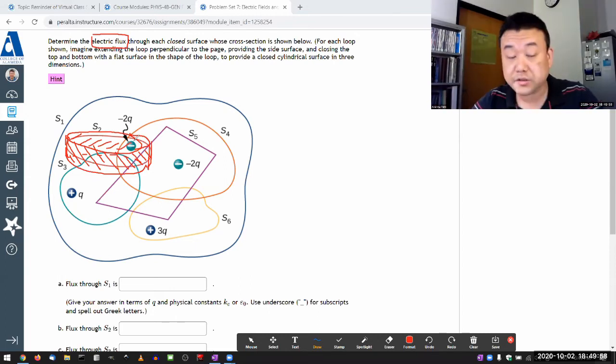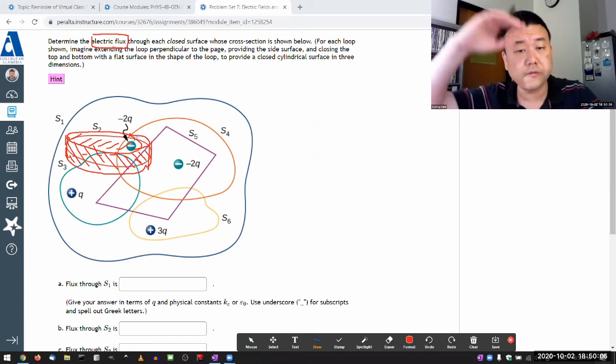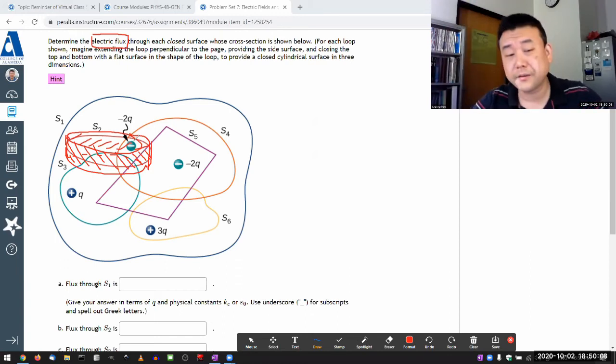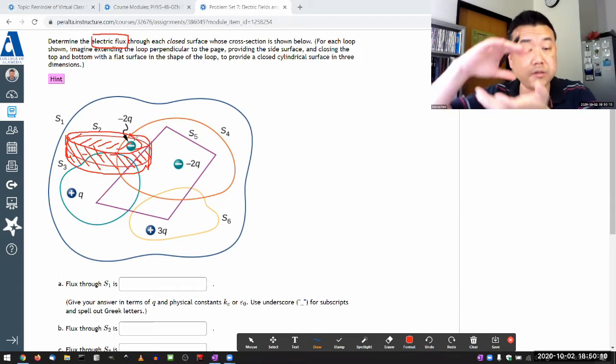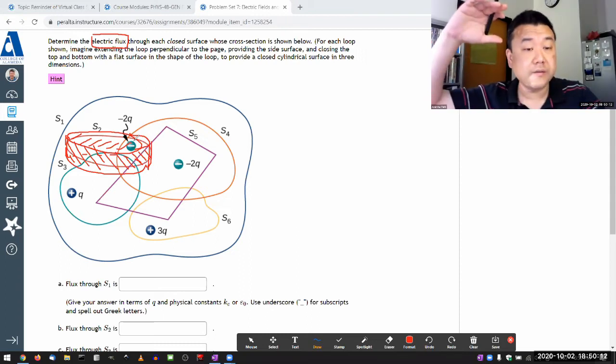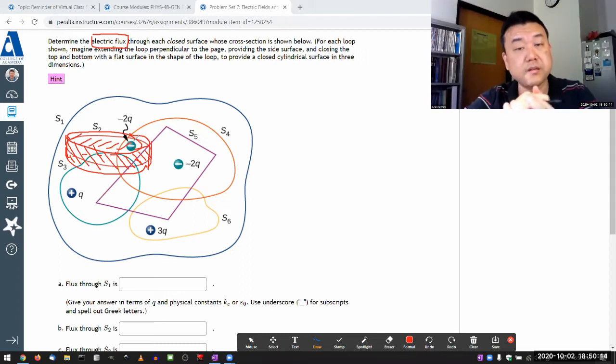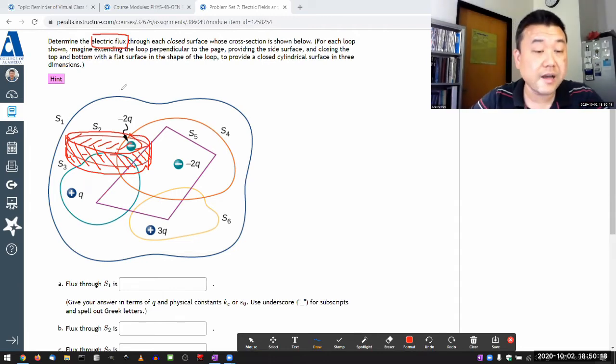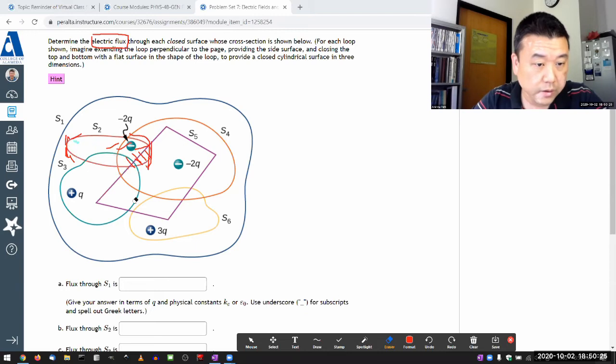This is the interesting thing about Gauss's law: it only relates to how much charge is enclosed. The actual area of the surface doesn't end up mattering. If it's enclosing the same amount of charge, then with a smaller surface, the increase in electric field magnitude just exactly cancels out compared to a larger surface.